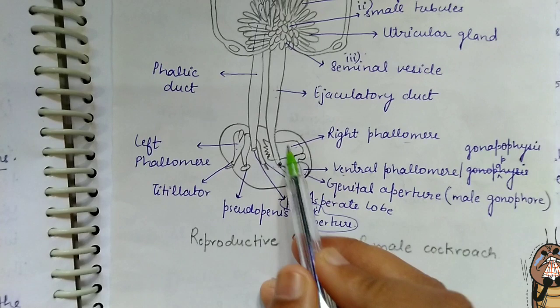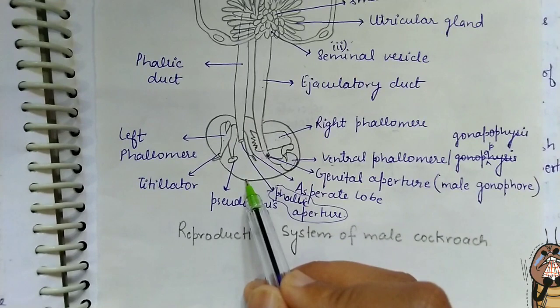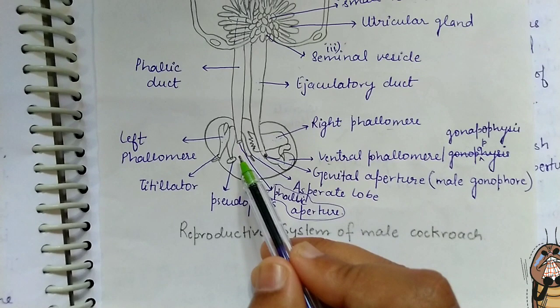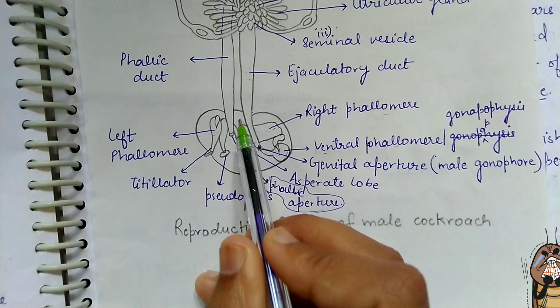Phallomeres are also called gonapophyses. They are irregular cutaneous processes present around the genital aperture, and their main function is to help in copulation. According to position, they are of three types: left phallomere, right phallomere, and ventral phallomere.